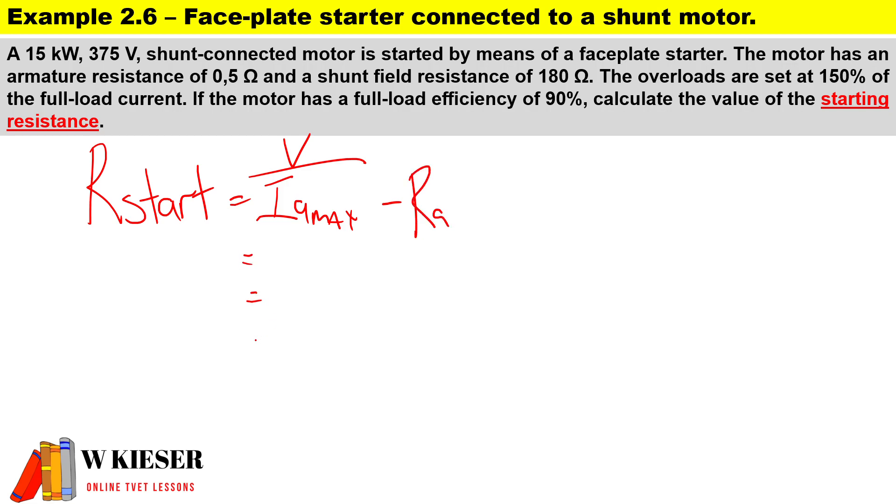That's basically the formula we'll use to answer this question, and we'll obviously need to calculate Ia max. If you have a look over there, our overloads are set at 150%, so that's 150 over 100 times how much current. So we still need to calculate armature current as well. We'll come back to these calculations. First of all, we need to calculate the armature current.